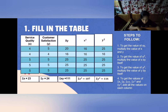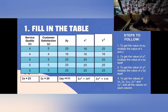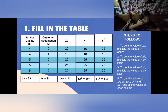Next, to get the summation of x, summation of y, summation of xy, summation of x squared, and summation of y squared, add all the values in each column. We add all the scores in each respective column to get these totals.